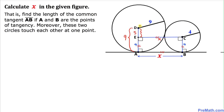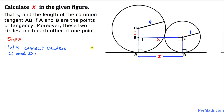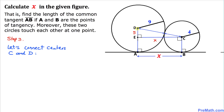Our figure is not 100% to scale. For the next step, let's connect the two centers C and D. As we can see, the line segment CD is the sum of the two radii: the bigger radius is 9 units and the smaller radius is 4 units. So the total length of CD is 9 plus 4, which equals 13 units.